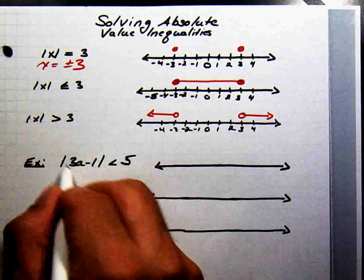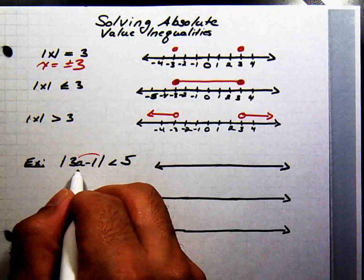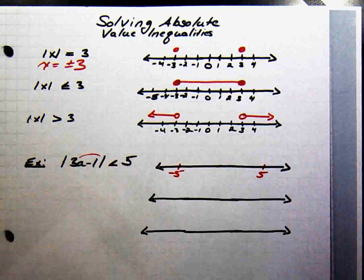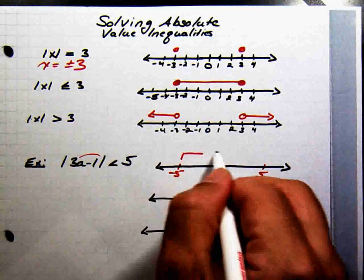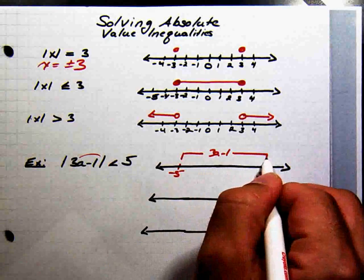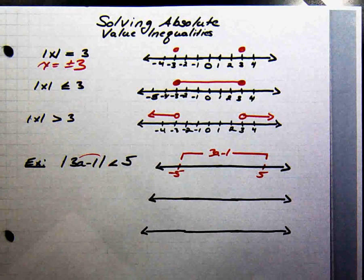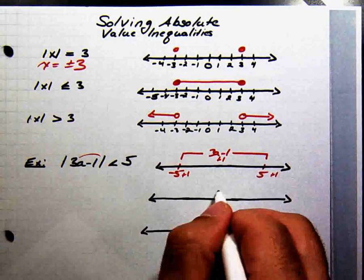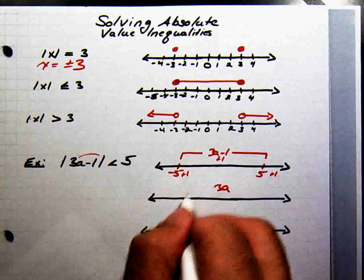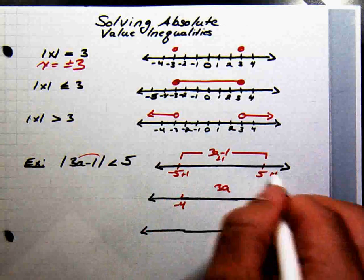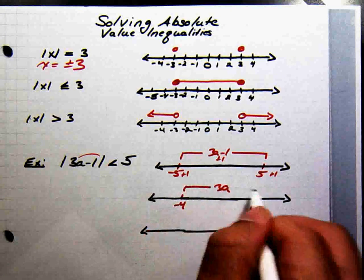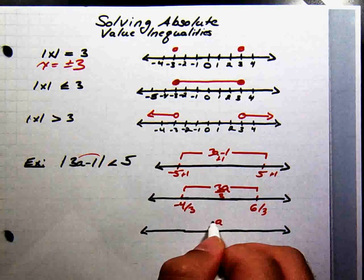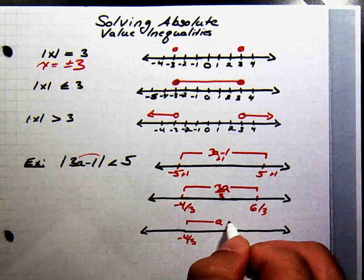This says this quantity, represented by 3a minus 1, has a distance away from 0 less than 5. So we're going to put 5 and negative 5 on a number line, and we're going to stick 3a minus 1 as the quantity whose distance is in between the two. Now if we add 1 to everybody, 3a is going to be in between negative 4 and 6.